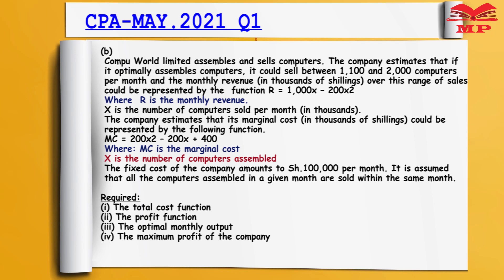Required: Roman (i) the total cost function — 2 marks; Roman (ii) the profit function — 2 marks; Roman (iii) the most optimal monthly output — 3 marks; Roman (iv) the maximum profit of the company — 2 marks.